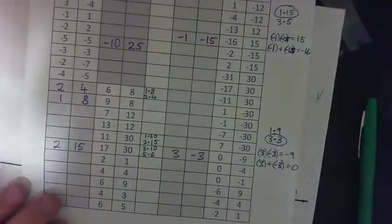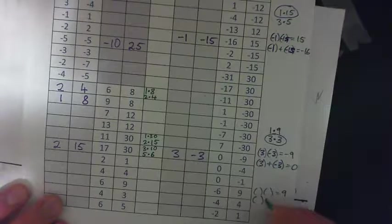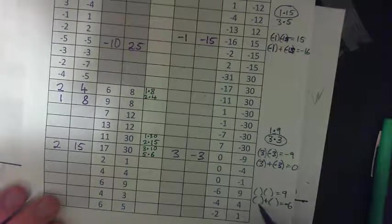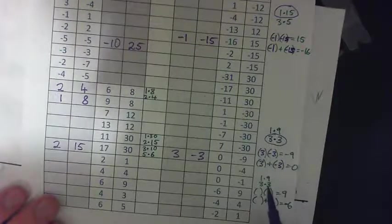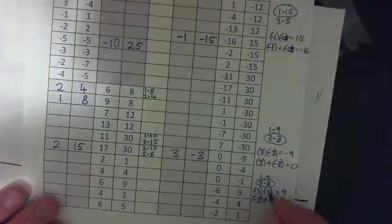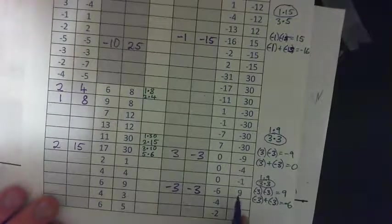We'll see if we can work your way through here. What two numbers multiply to positive 9 and add to negative 6? 9 is 1 times 9 and 3 times 3. Remember, 3 and 3 make 6. How about negative 3 and negative 3? Those add to negative 6, and if you multiply them you get positive 9. So negative 3 and negative 3 add to negative 6 and multiply to positive 9.